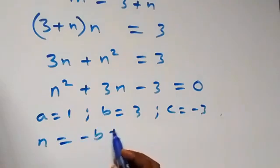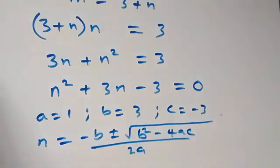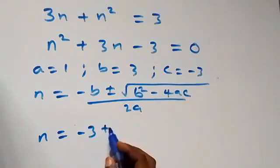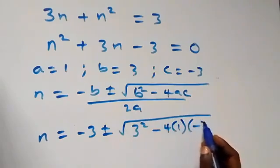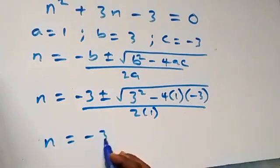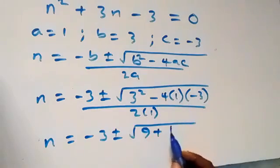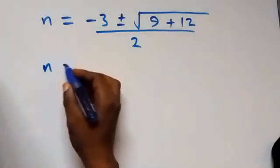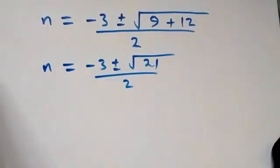Applying the quadratic formula, n equals negative b plus or minus the square root of b squared minus 4ac, all over 2a. Substituting in, n equals negative 3 plus or minus the square root of 9 plus 12, which gives negative 3 plus or minus the square root of 21, all over 2.